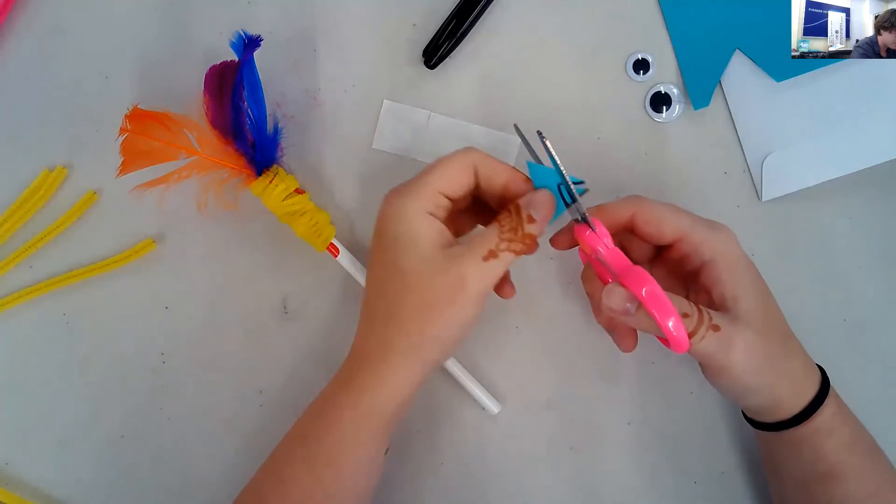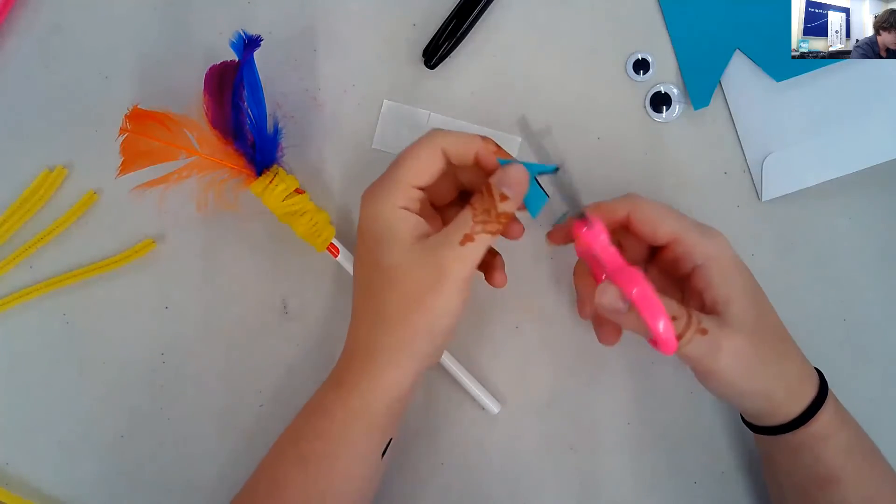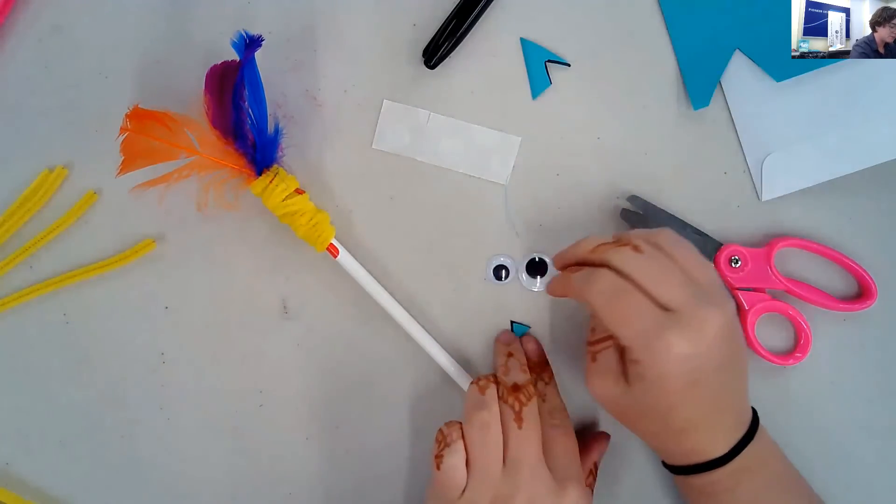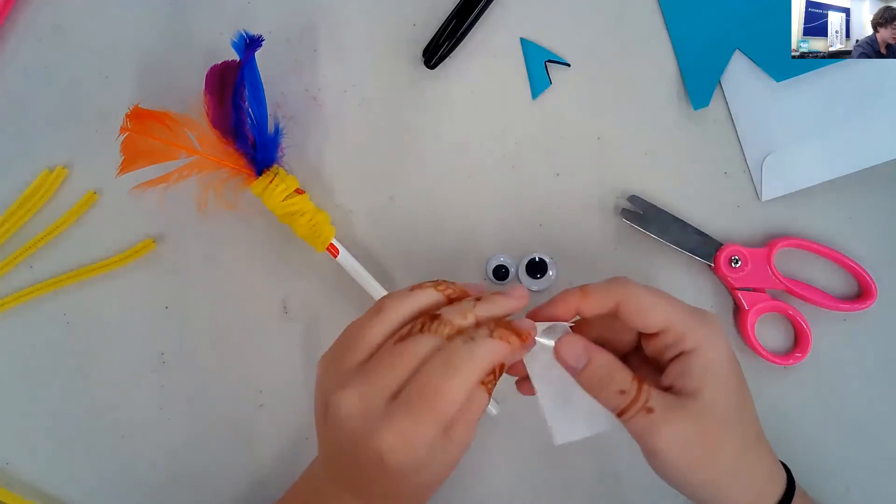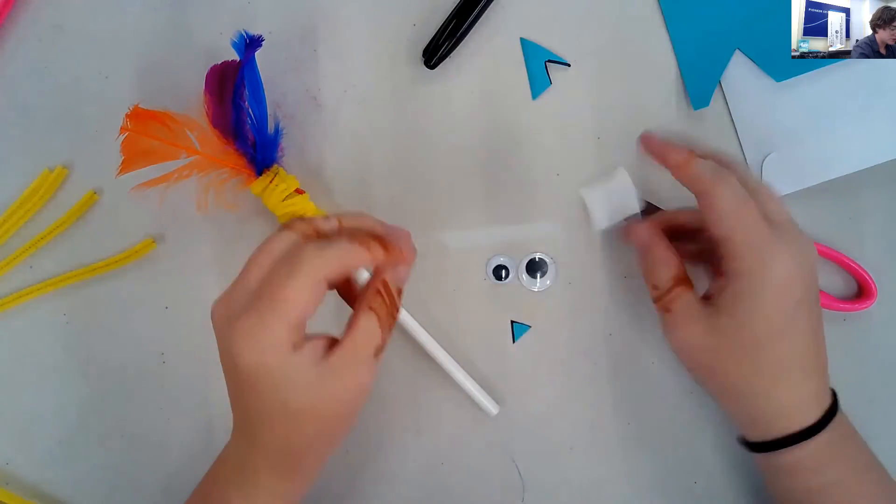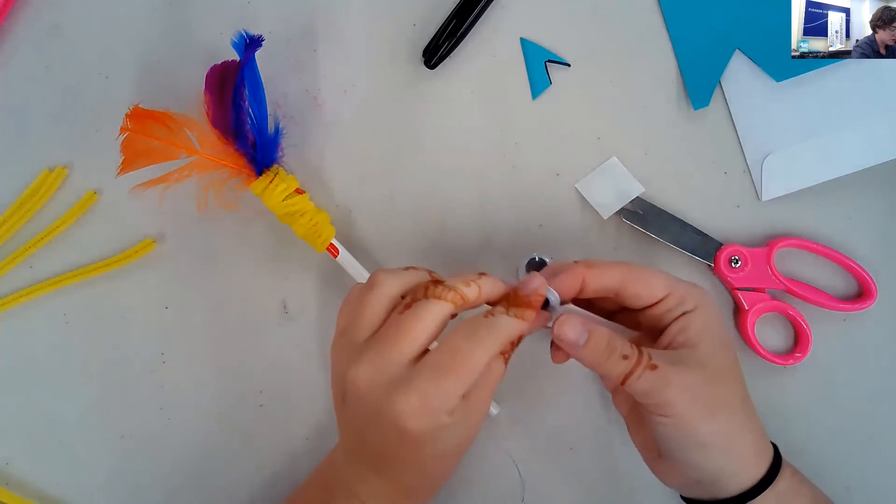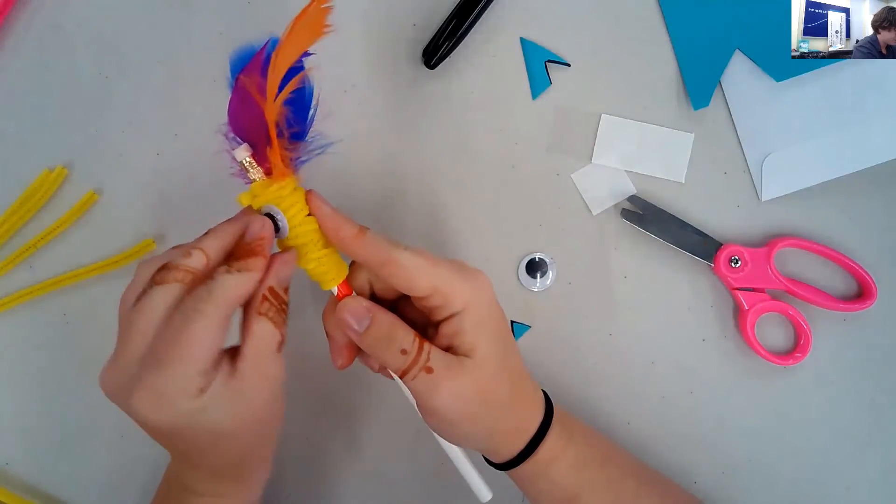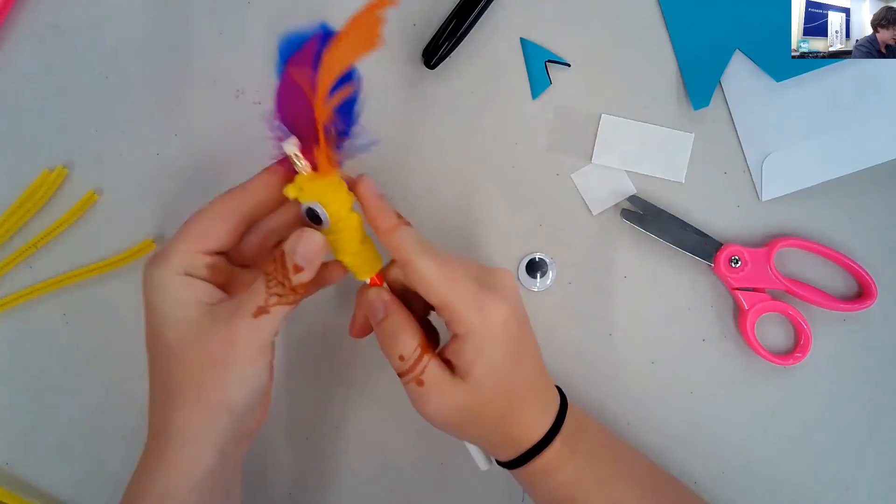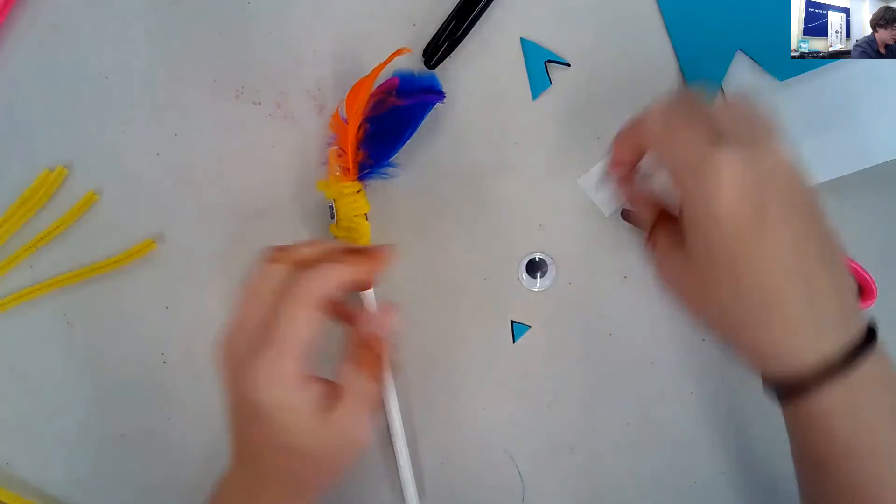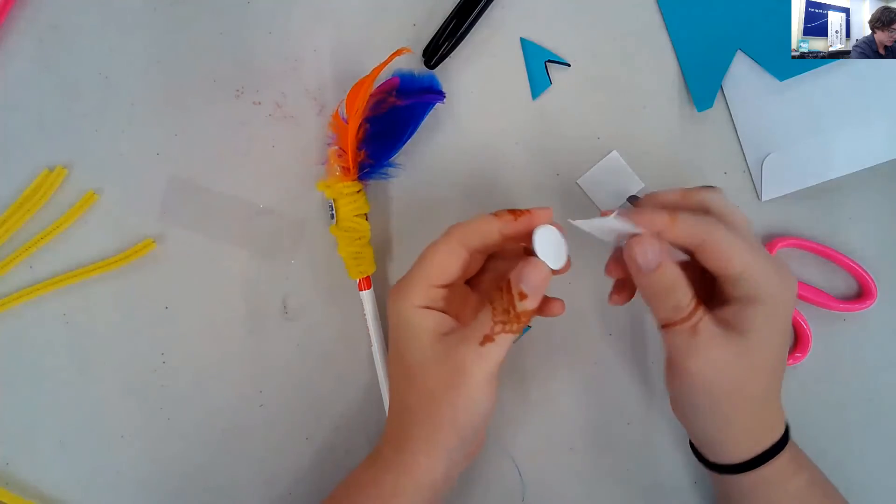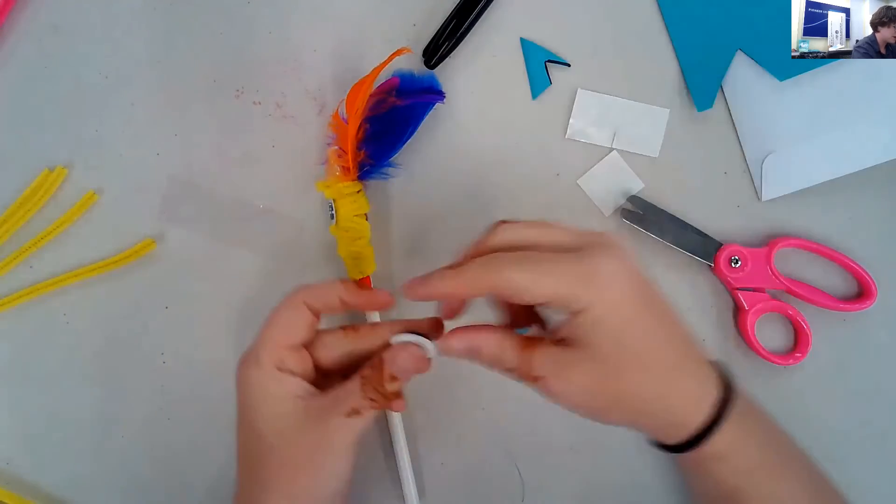Now you've got eyes and a beak. You're going to take your glue dots and glue your eyes and your beak down. There is one eye. Two eyes.